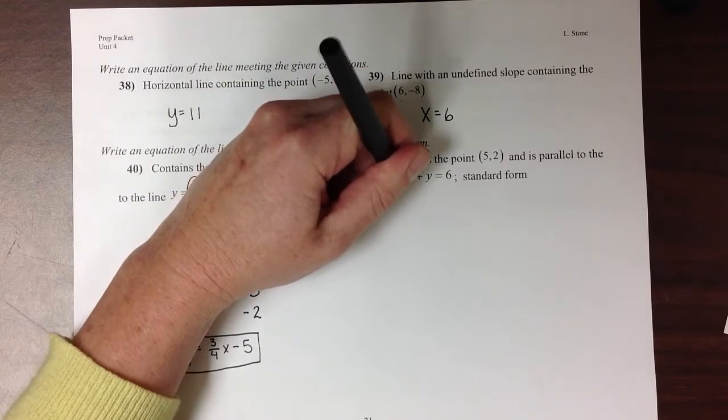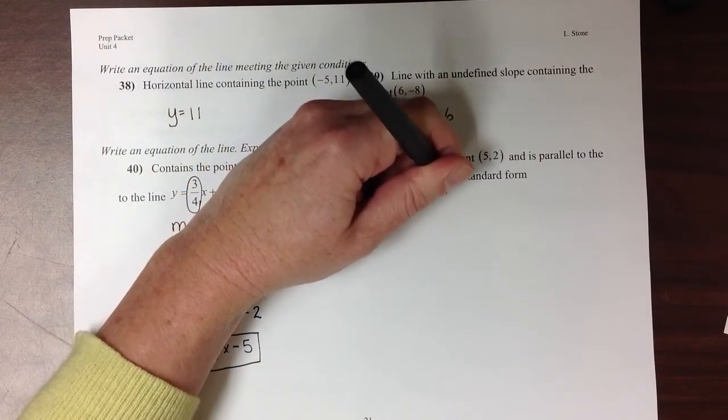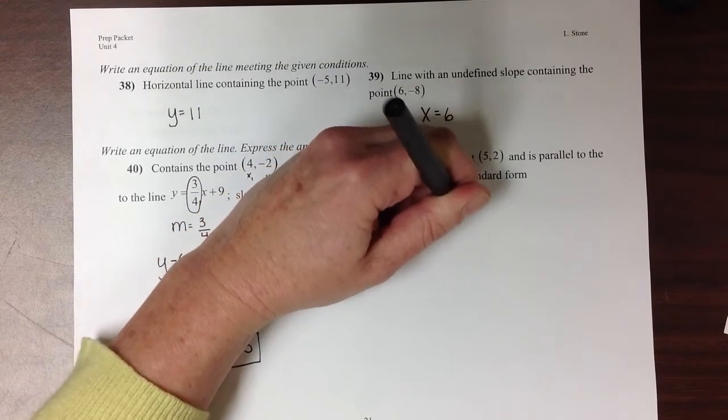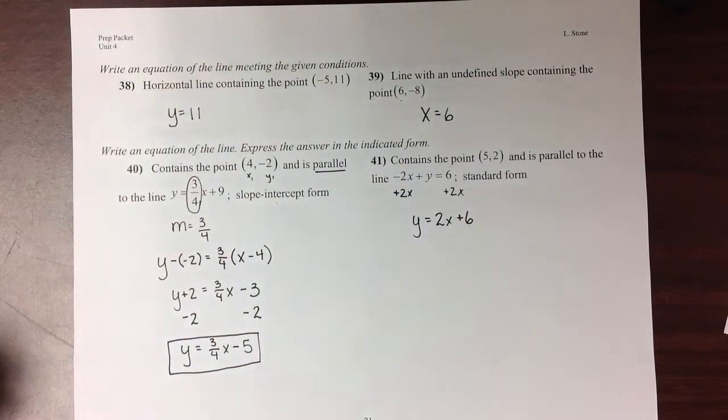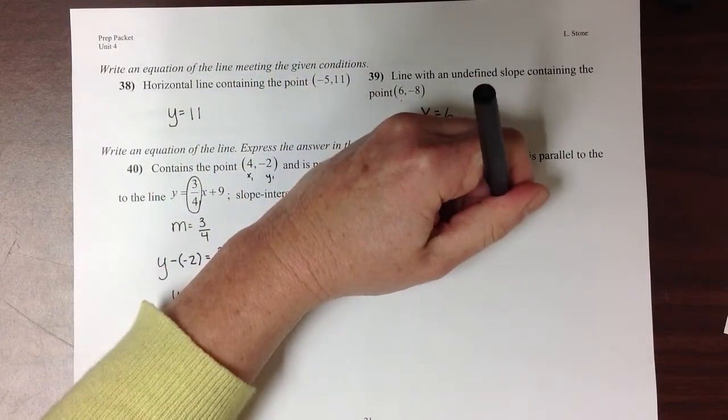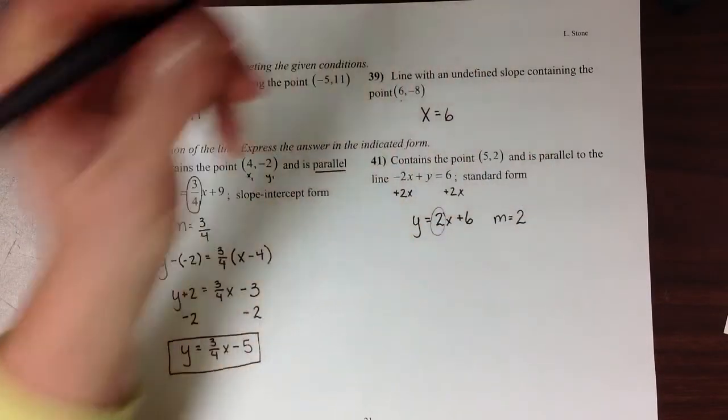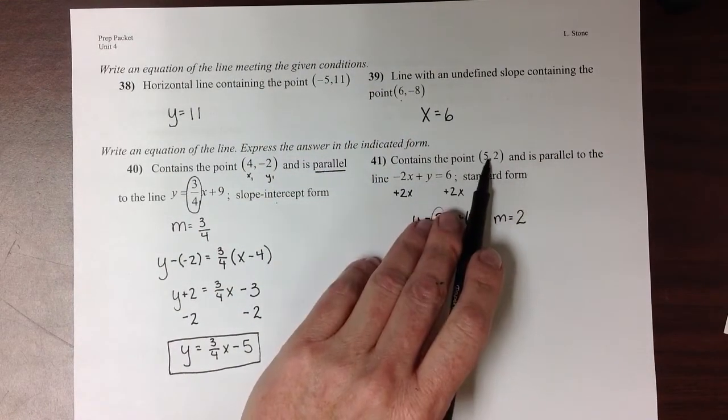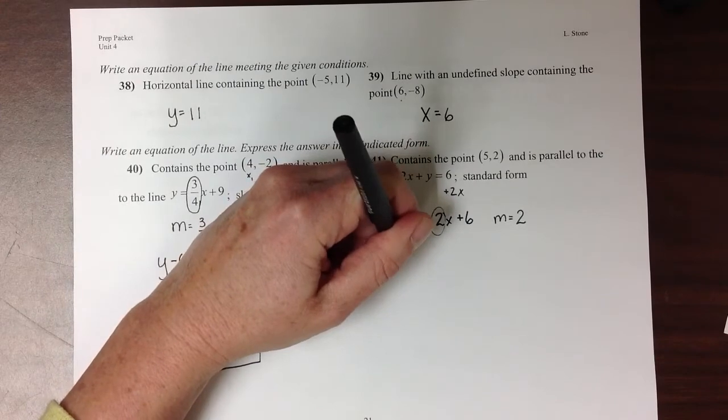So by moving the 2x to the other side, I can get this into slope-intercept form. Now that it's in that form, I can tell that my slope is equal to 2. So knowing the slope and knowing a point, I put it into point-slope form.